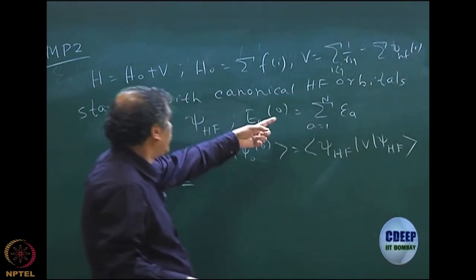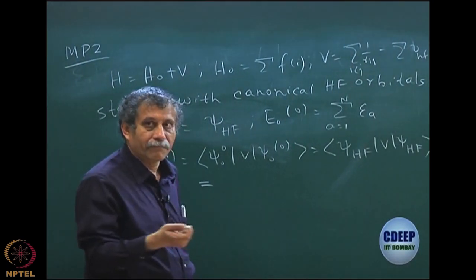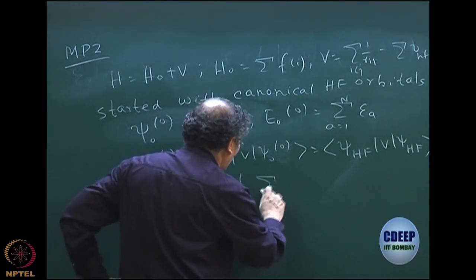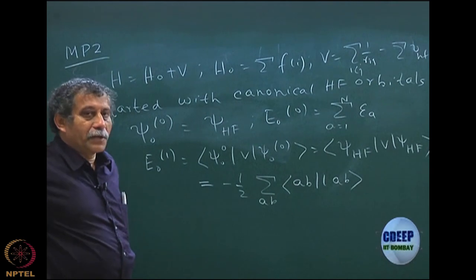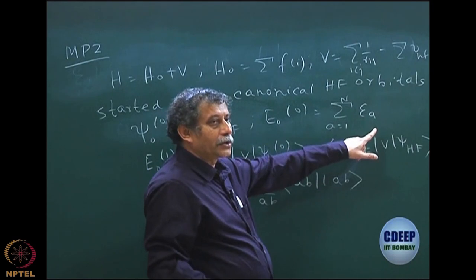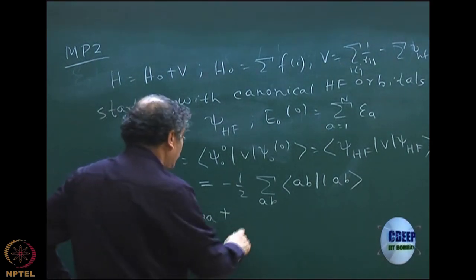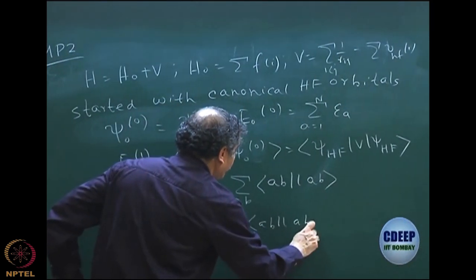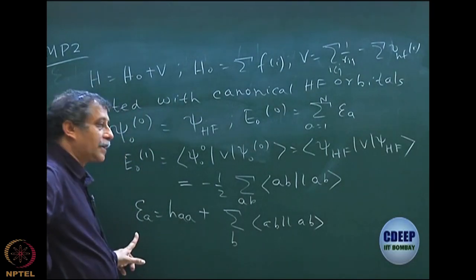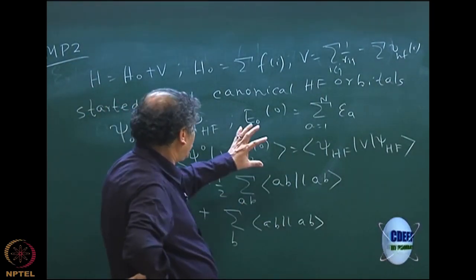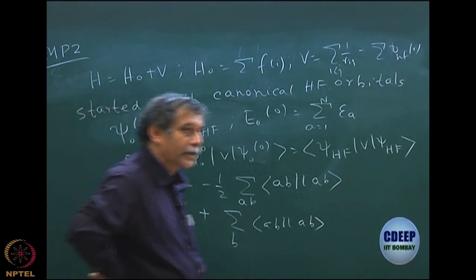V is just 1/r_ij. This would be added to the orbital energies eventually to get total Hartree-Fock energy. In terms of spin orbitals, it is minus one-half, sum over all A, B — ⟨AB | AB⟩ antisymmetrized — where these are the spin orbitals. If you add this to the orbital energy, you get the total, because epsilon_A was H_AA plus sum over B of ⟨AB||AB⟩. Adding the first-order perturbation correction gives half of ⟨AB||AB⟩, and that gives you the Hartree-Fock energy.